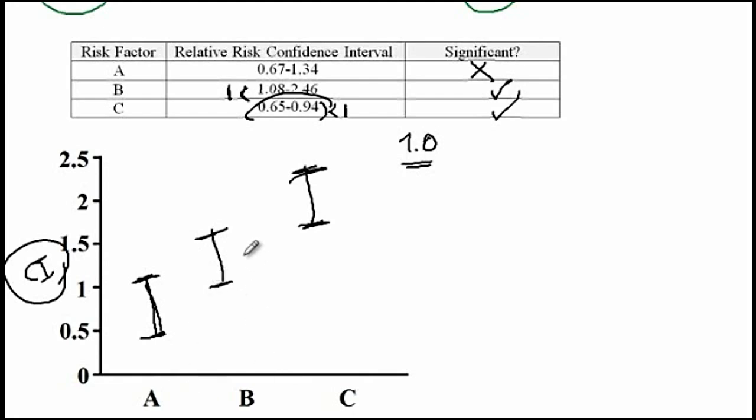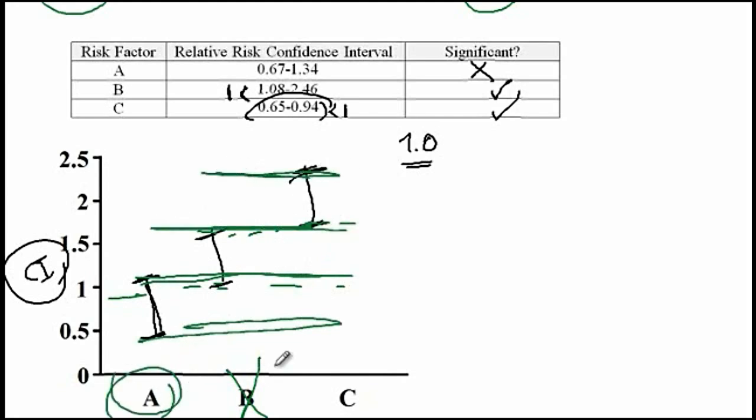If you've noticed, drug B, the confidence interval actually does intercept the other ones. So therefore drug B is not significantly different from drug C and drug A. However, if you look at drug A versus drug C, they do not overlap. So the effects of drug A is significantly different than drug C. And that concludes our discussion.